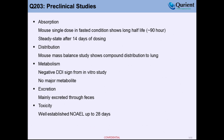Metabolism-wise, the compound does not show many metabolites — there is no major metabolite from hepatocyte in vitro assays using various species, and almost more than 90% of the compound remains in parent form. The compound is excreted through the feces, and we have established a NOEL up to 28 days of dosing in both rodent and non-rodent.